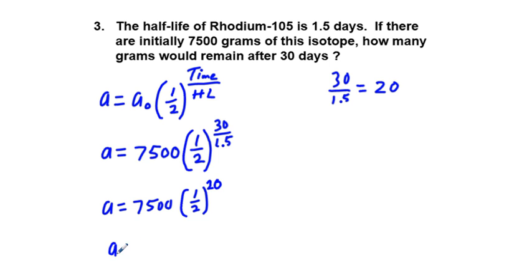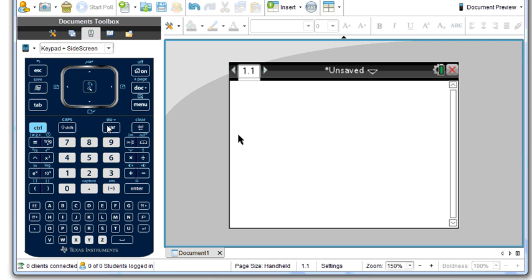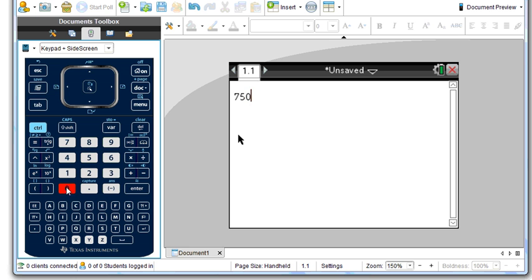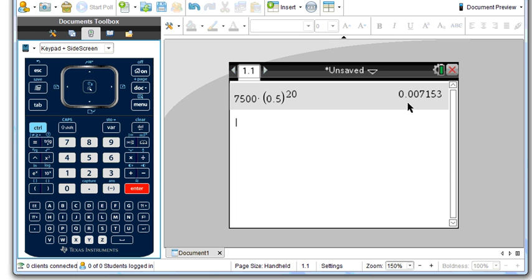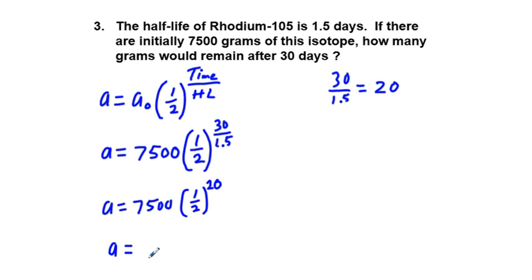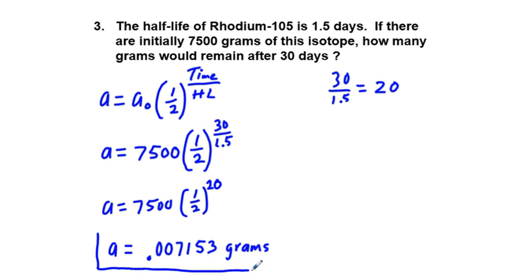Let's go ahead and put that in our calculator. A equals 7,500 times 0.5 to the power of 20, and we get 0.007153 grams of rhodium-105. A half-life of 1.5 days really makes that isotope disappear in a hurry.